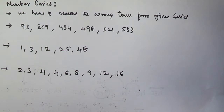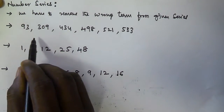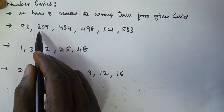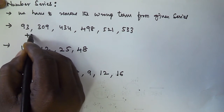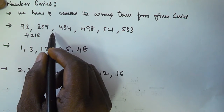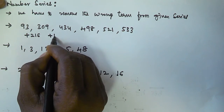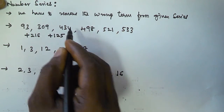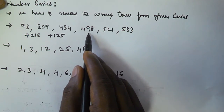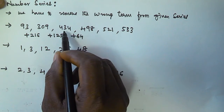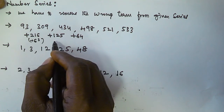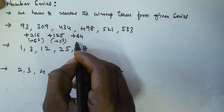Looking at the first series, the difference between 93 and 309 is plus 216. From 309 to 434, the difference is plus 125. From 434 to 498, the difference is plus 64. So 216 is equal to 6 cubed, 125 is equal to 5 cubed, and 64 is equal to 4 cubed.